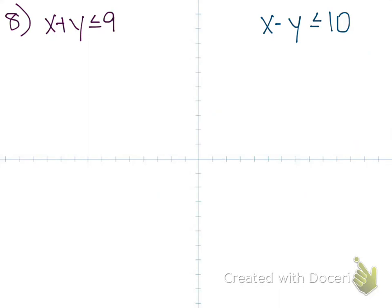So the one on the left, x plus y less than or equal to 9, I just have to get y by itself. So I'm going to move my x term. And that's going to give me y is less than or equal to negative x plus 9.